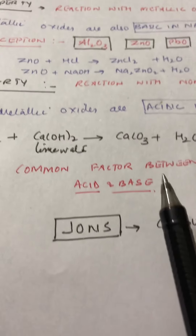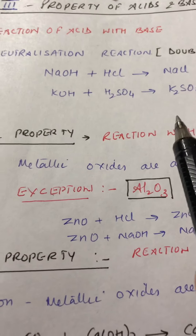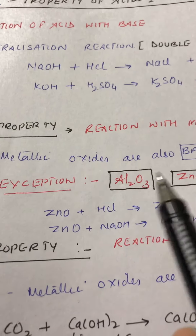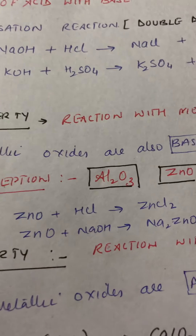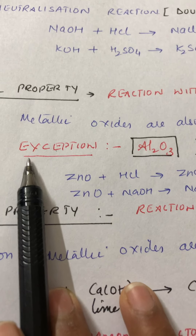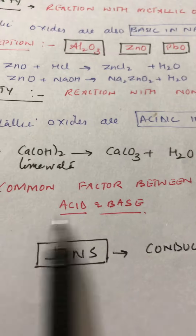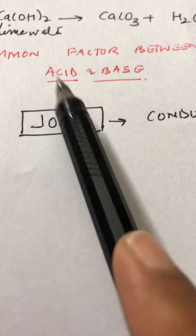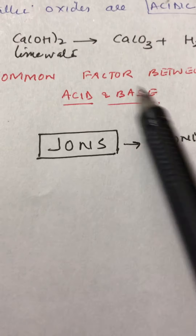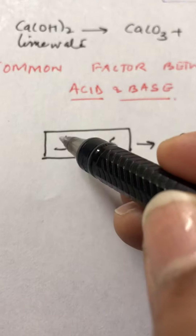So far we have repeatedly proved that acids and bases are opposites of each other — what acid does, base does not do, and vice versa. But now the topic slightly surprises us: what is the common factor between acid and base? The common thing between acids and bases is ions.